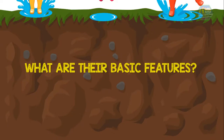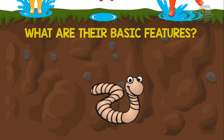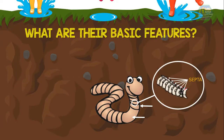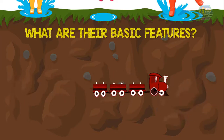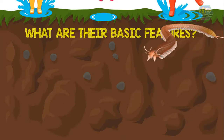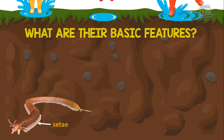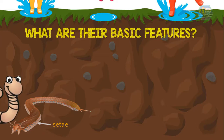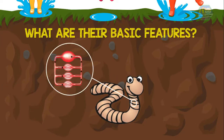Well, they are vermiform, or worm-like. They are segmented inside and outside. Internal segments are separated by septa, or walls. Their body division is called metameric segmentation. They move in locomotion like a train, but instead of wheels they have two pairs of setae — hairs made of chitin — in each segment.